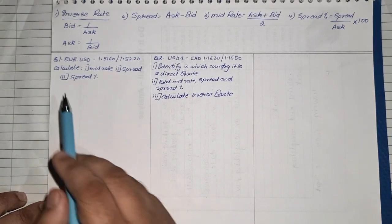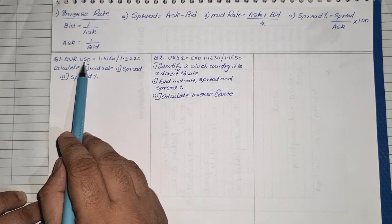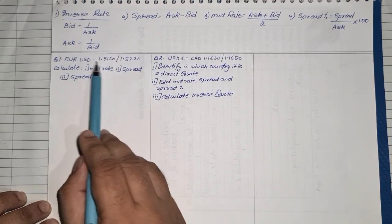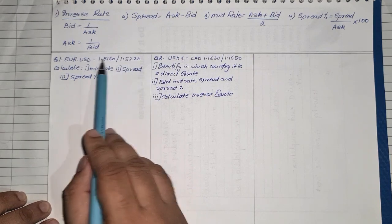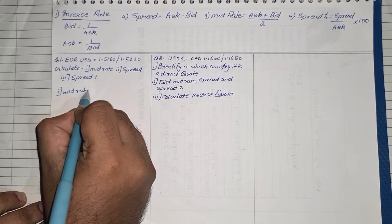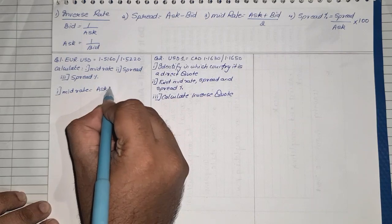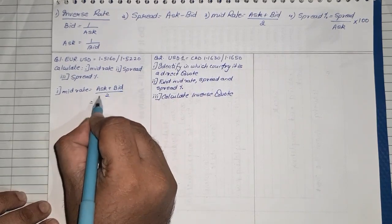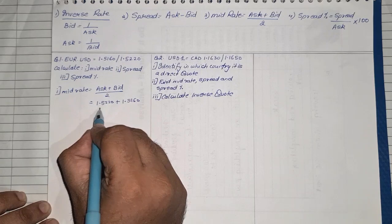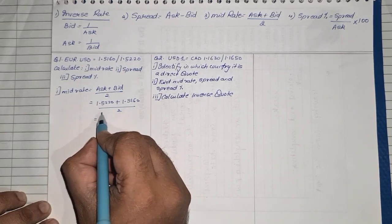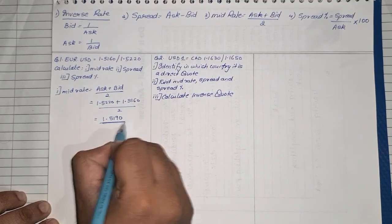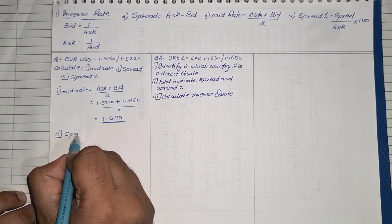Question number one: Euro to USD is given as 1.5160 / 1.5220. The first rate is always your bid rate and the second rate is always your ask rate. They are asking us to calculate the mid rate. Mid rate formula is ask rate plus bid rate divided by two: 1.5220 plus 1.5160 divided by two equals 3.038 divided by two, giving us 1.5190 as the mid rate.